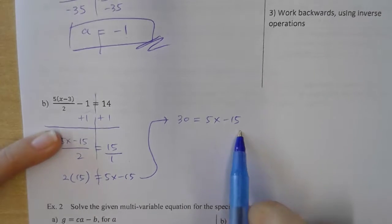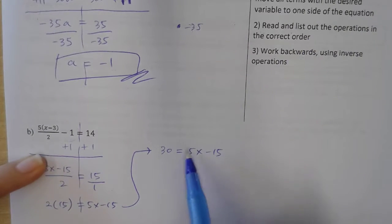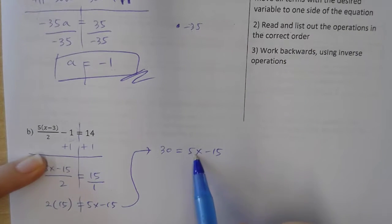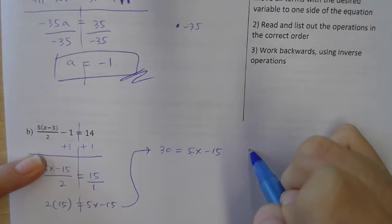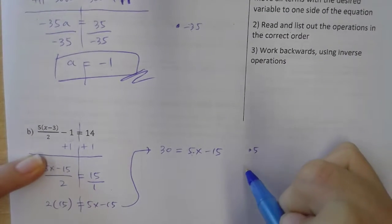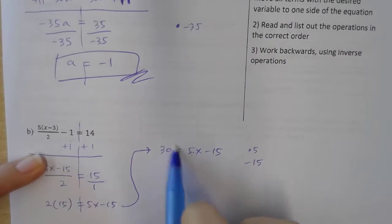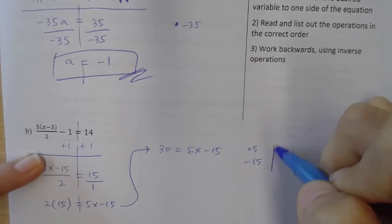30 is equal to 5x minus 15. So at this point, I'm gonna go ahead and read the operation done in the order. So again, I'm looking at the x. What's happening? PEMDAS. No parentheses. No exponent. Multiplication. I see it. So I first multiply by 5 and then I subtract 15. Right? And then I got this thing. So I go backwards.